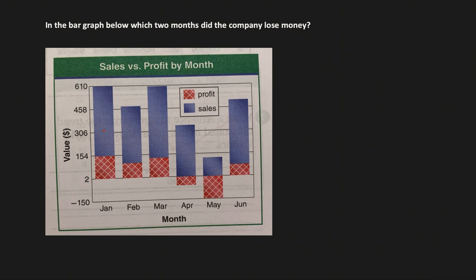In this graph, which is sales versus profit by month, sales is this blue line and the profit is the red one. The question is, in the bar graph below, which two months did the company lose money? You can see that this is the minimum value where the line starts. Below this is all negative numbers, as you can see it's minus 150, and above this line is all positive numbers.